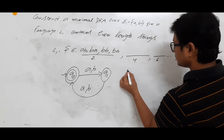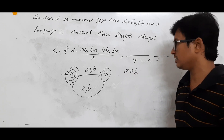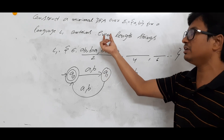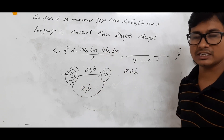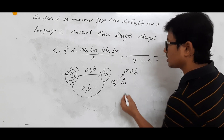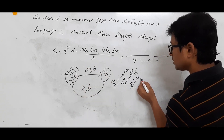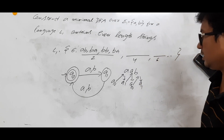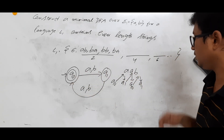Now consider AAB. Its length is 3, which is odd, so it does not belong to L1 and the DFA should not accept it. We trace: from Q0 on A we go to Q1, from Q1 on A we go to Q0, from Q0 on B we go to Q1.